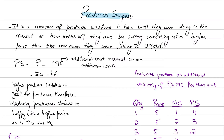For example, if producing a unit costs the producer six dollars — that's the marginal cost, which is the additional cost incurred on an additional unit — and the producer is selling that product at ten dollars, then the producer surplus would be four dollars on that single unit.